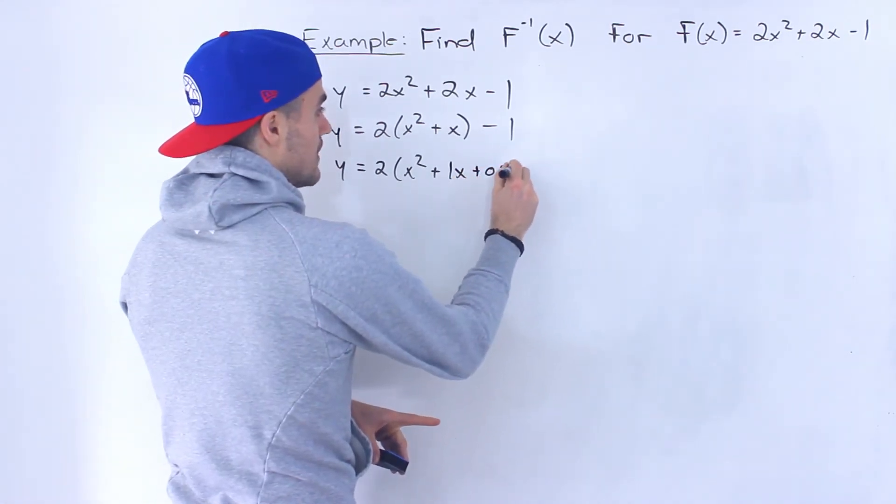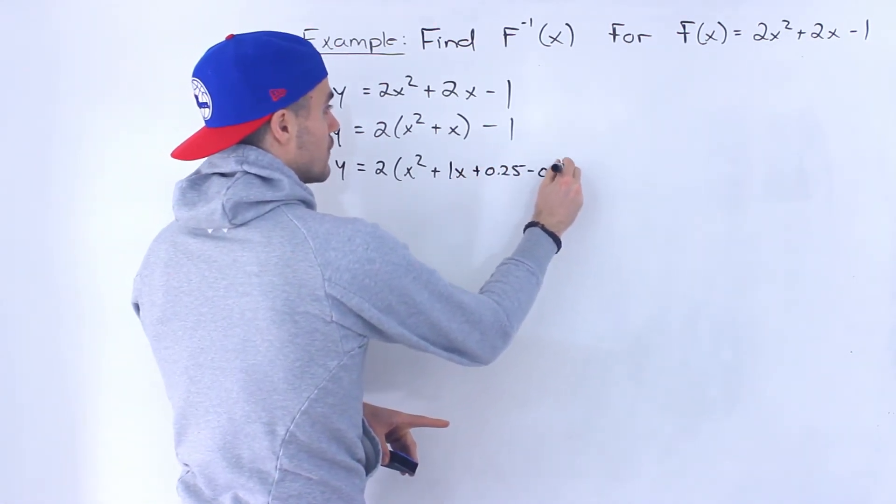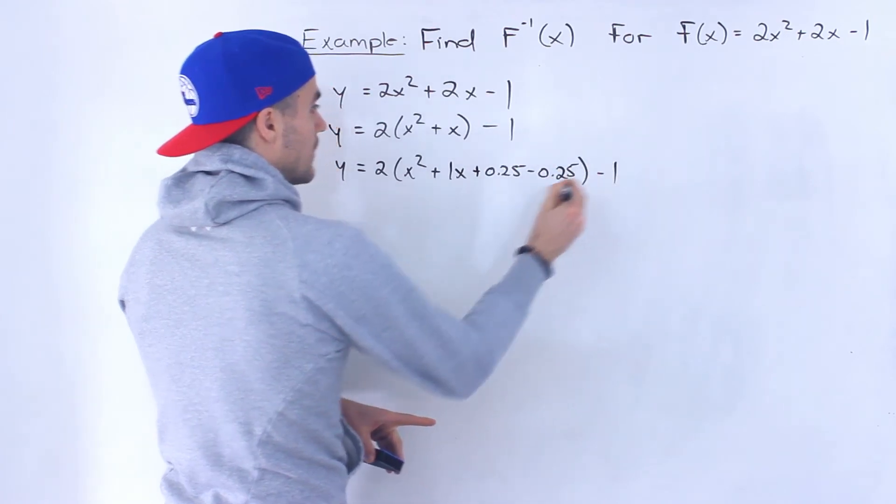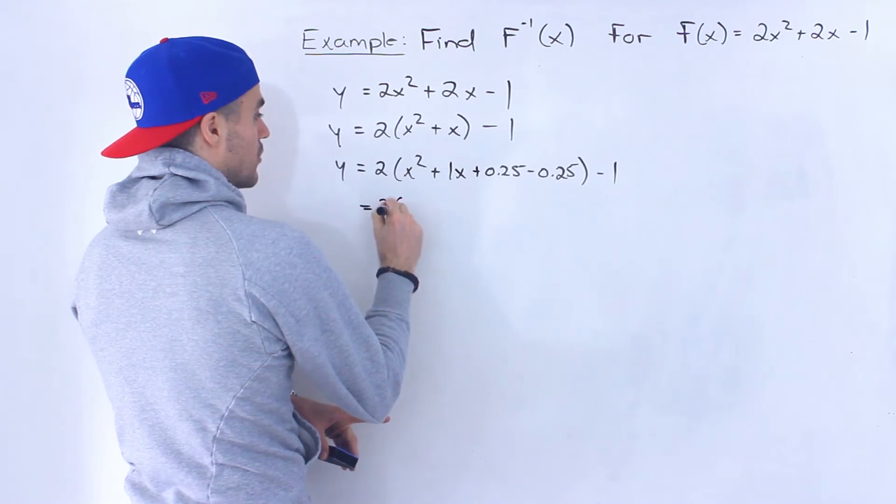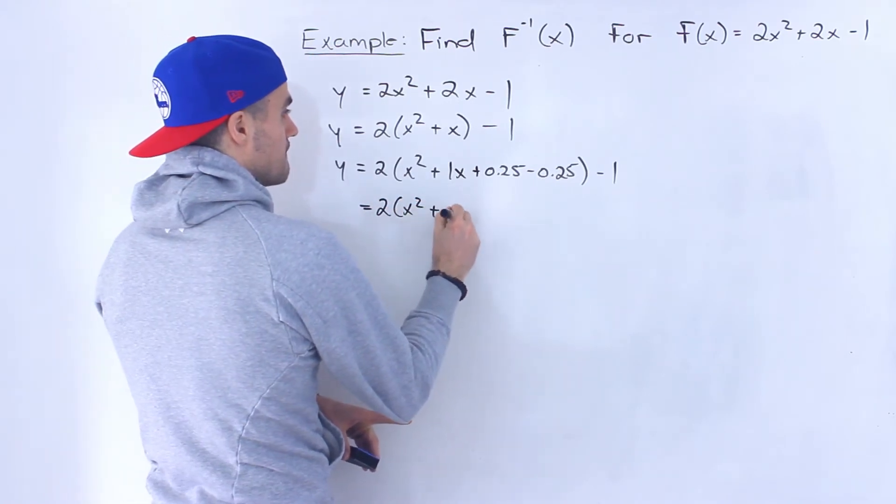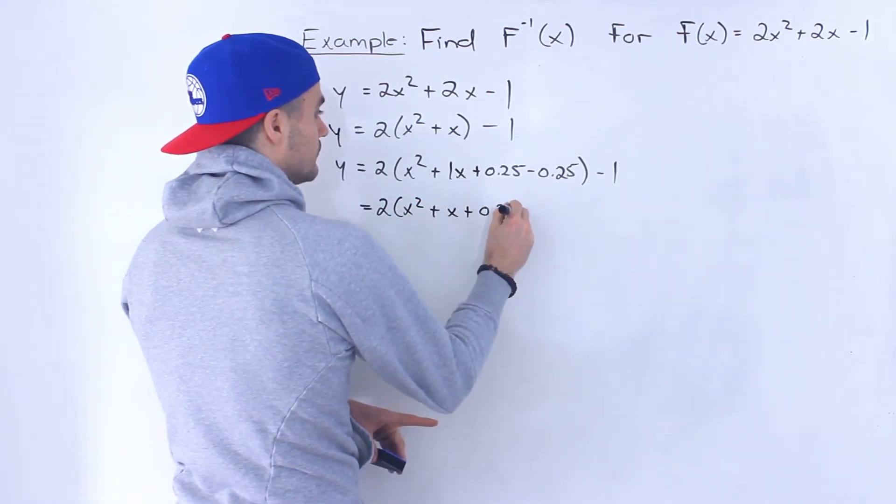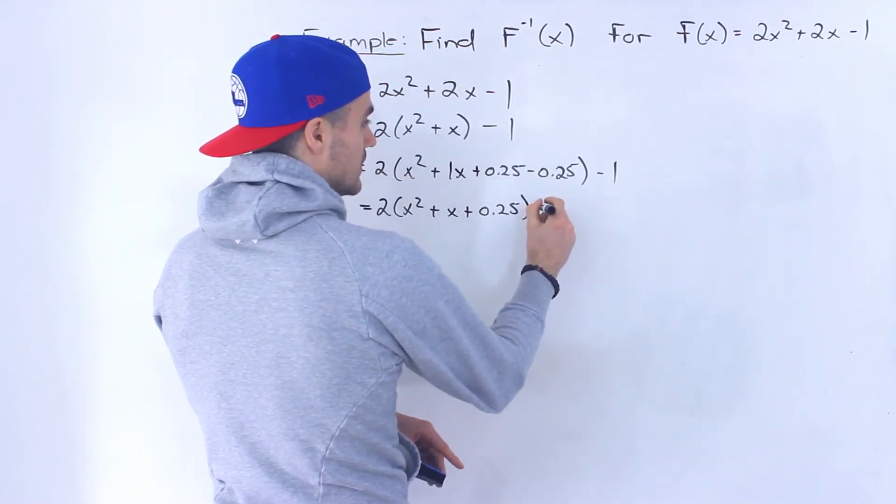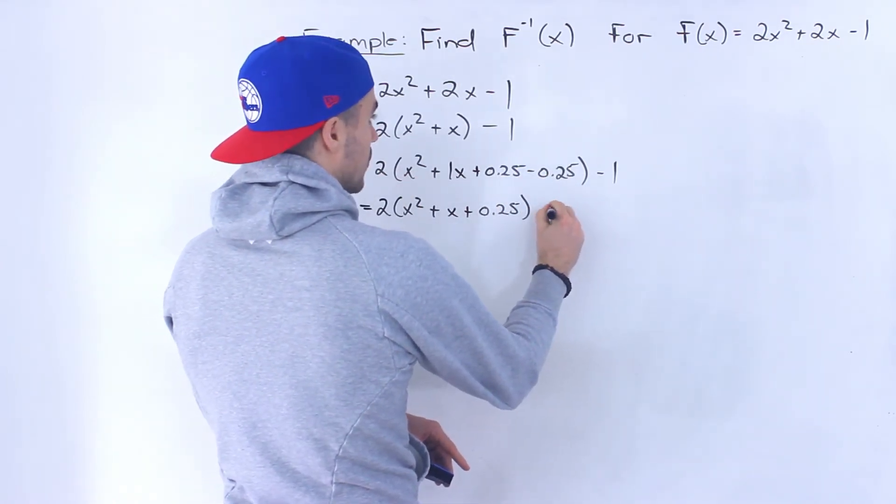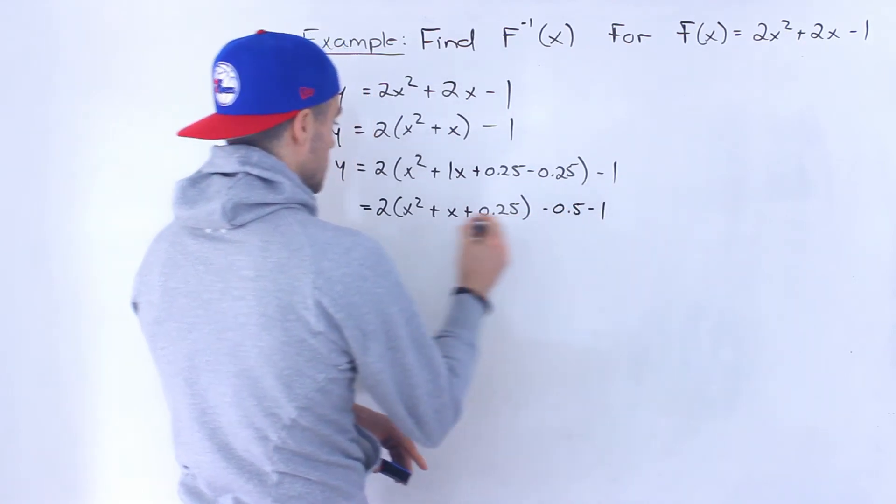We'd have plus 0.25, minus 0.25, and we'd have a minus 1. Then we'd take out the minus 0.25 from the bracket. And 2 times negative 0.25 would give us negative 0.5. Then we'd have a minus 1 here.